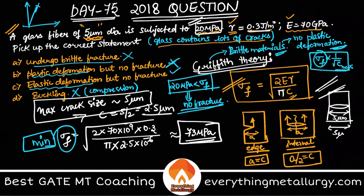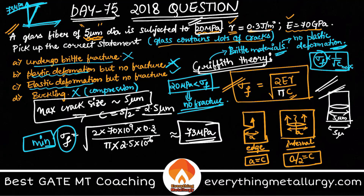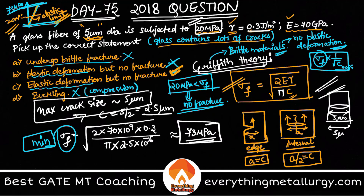On the stress-strain graph, the fracture point is at 73 MPa, but we are only applying 20 MPa. So we are sitting within the linear elastic region of the curve. That means elastic deformation is taking place, but fracture is not — because we are dealing with a brittle material that deforms elastically before fracture.